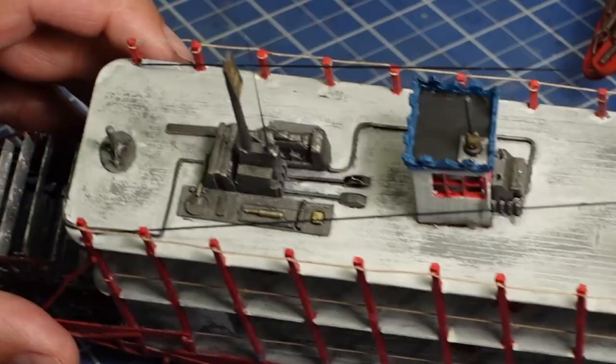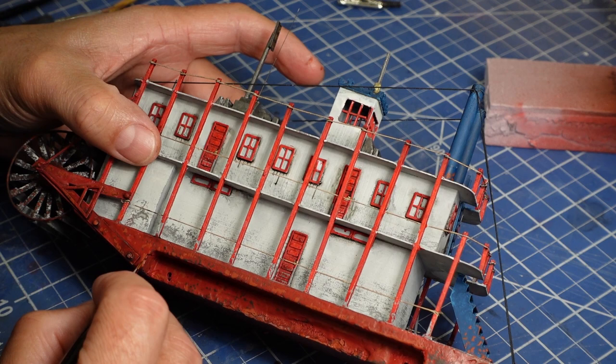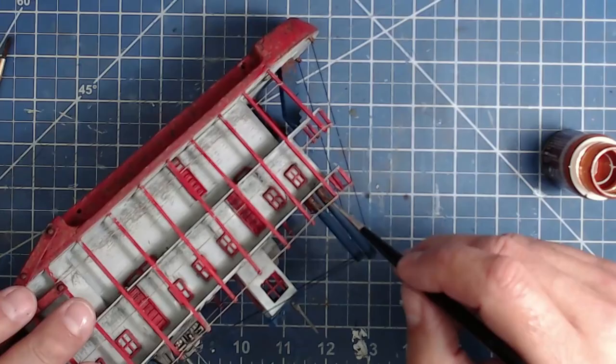The whole model gets an acrylic black wash. Details are brought out with a black oil wash, essentially a pin wash. The hull gets rust chips in various colors. A little rust wash in the right areas, and the boat is done.